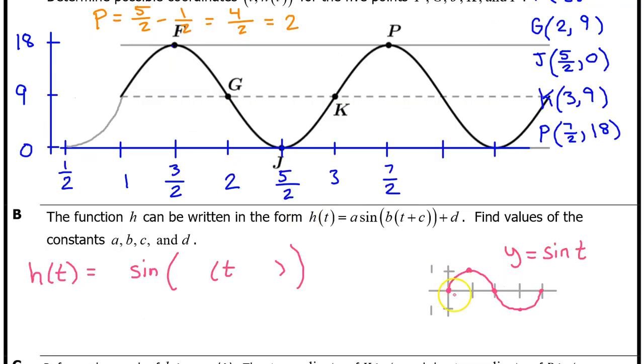We have memorized that the parent function y equals sine t looks like this. Let's trace this shape on h of t for comparison. I'm going to use this period of h of t to write my equation. However, you can get other correct answers by using a different period, like this one. As long as you pick a period of h of t that looks like the parent function, the a value will be the amplitude of h of t, the distance between the midline and the highest value, which is 9. So, the a value is 9.